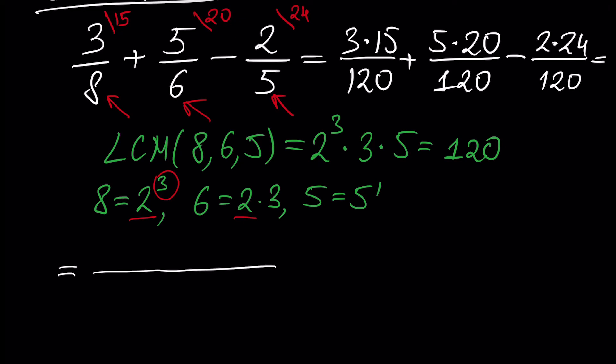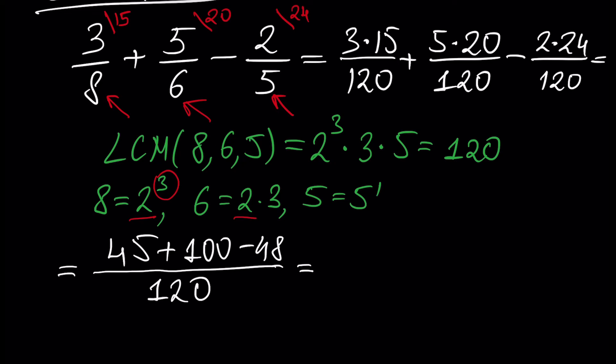The denominator stays as 120. 3 times 15 is 45, plus 5 times 20 which is 100, minus 2 times 24 which is 48. That gives us 97 over 120. This is the final result.